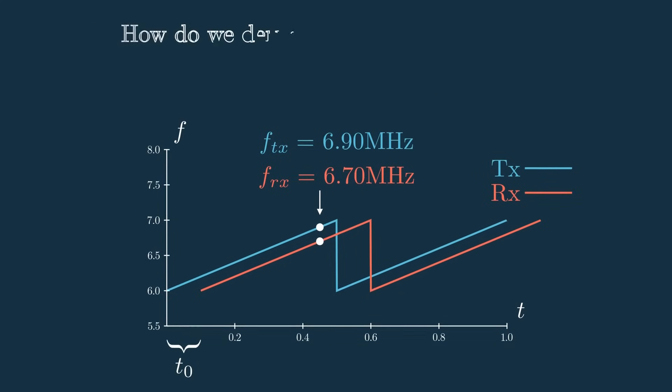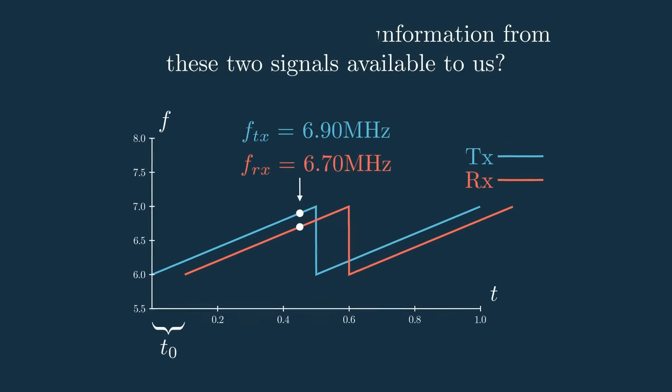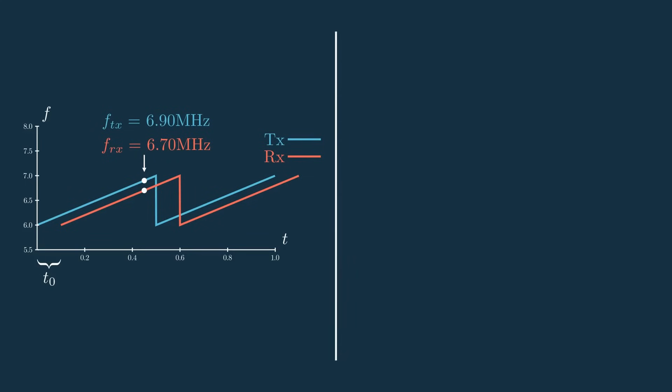So, how do we derive range information from these two signals available to us? Well, we know the speed at which electromagnetic waves travel, so if we knew how long it traveled, or in other words this time shift, we could determine the distance traveled by multiplying the two together. This would give us the entire round trip distance, so dividing by two would give us just the distance to the target that we're looking for. But now we need to solve for the time shift.